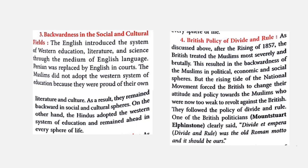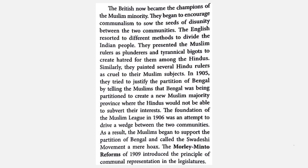One British politician, Mount Stuart Elphinstone, clearly stated: 'Divide and rule was the old Roman motto and it should be ours.' The British now became the champions of the Muslim minority — earlier they were against them, but now they started to support the Muslims, knowing they were too weak to revolt while the Hindus were growing strong enough to challenge British rule. They began to encourage communalism to sow the seeds of disunity between the two communities.